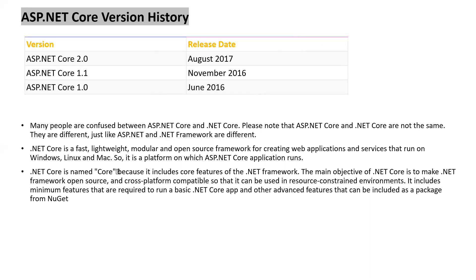Similarly, .NET Core is the basic framework, and over .NET Core we have ASP.NET Core applications. .NET Core is named 'Core' because it includes the core features of the .NET Framework. The main objective of .NET Core is to make .NET Framework open-source and cross-platform compatible so that it can be used in resource-constrained environments. It includes features required to run basic .NET Core apps, and other advanced features can be included as NuGet packages. Most things can be implemented using these NuGet packages in ASP.NET Core, because it is a modular framework distributed using NuGet packages.